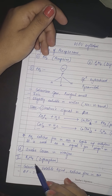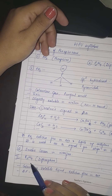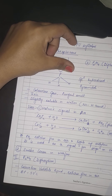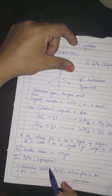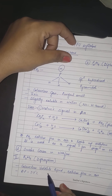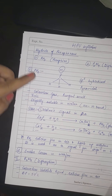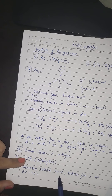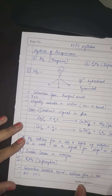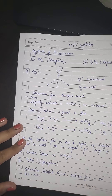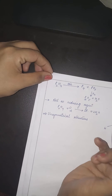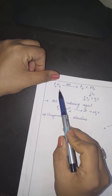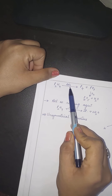Phosphorus ka doosra hydride P₂H₄ hai, jise diphosphine bhi kehte hain. Yeh ek colorless volatile liquid hai — PH₃ ek gas thi lekin P₂H₄ ek liquid hai. Iska ek property yeh hai ki yeh bhi air mein fire catch kar leta hai.